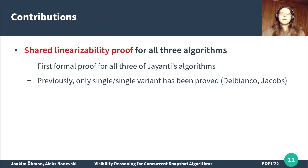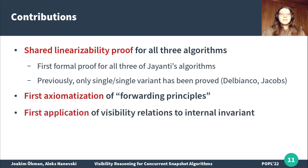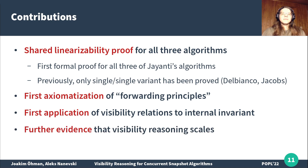In this work, we provide one linearizability proof that applies to all three of Yanti's algorithms. This is the first formal proof of all three of Yanti's algorithms. Previously, only the single-scanner single-writer variant had been proven linearizable by Dale Bianco, mechanized in Coq, and by Jacobs, mechanized in VeriFast. We are the first to axiomatize Yanti's forwarding principles, and we show that satisfying these principles is sufficient for an algorithm to be linearizable. This is the first application of visibility relations proving internal invariance of a set of algorithms, and it is unclear if linearization points can capture this form of invariance. This work also shows further evidence that visibility reasoning scales further than previously established, by showing that we can apply visibility reasoning to snapshots and internal invariants.